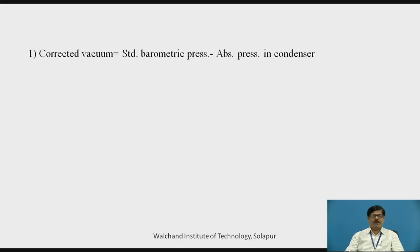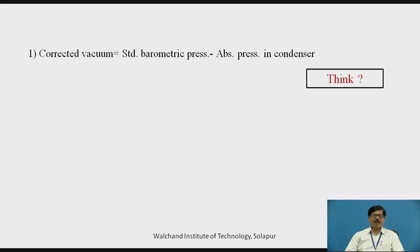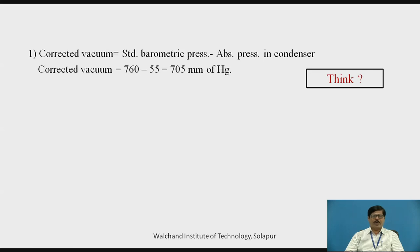Now let us see how to find out the corrected vacuum in the condenser. Corrected vacuum is given by standard barometric pressure minus absolute pressure in the condenser. The barometric pressure varies from location to location, so we use standard barometric pressure of 760 mmHg. Therefore, corrected vacuum equals 760 mmHg minus absolute pressure of 55 mmHg, which gives us 705 mmHg.